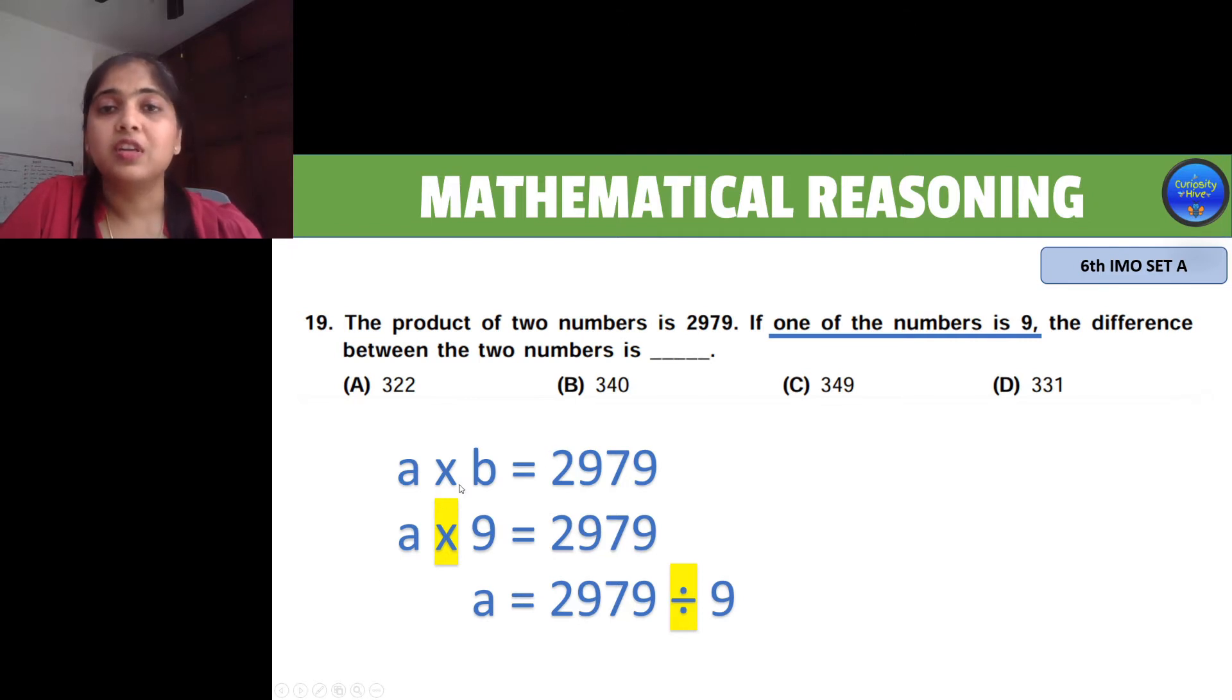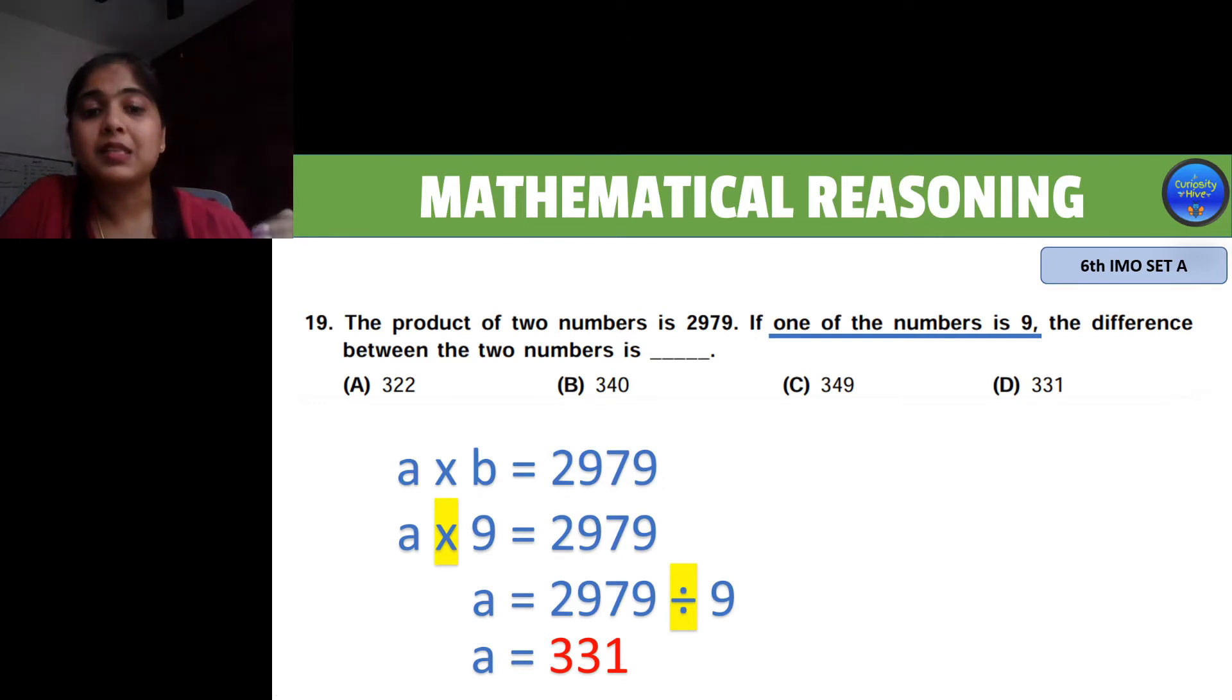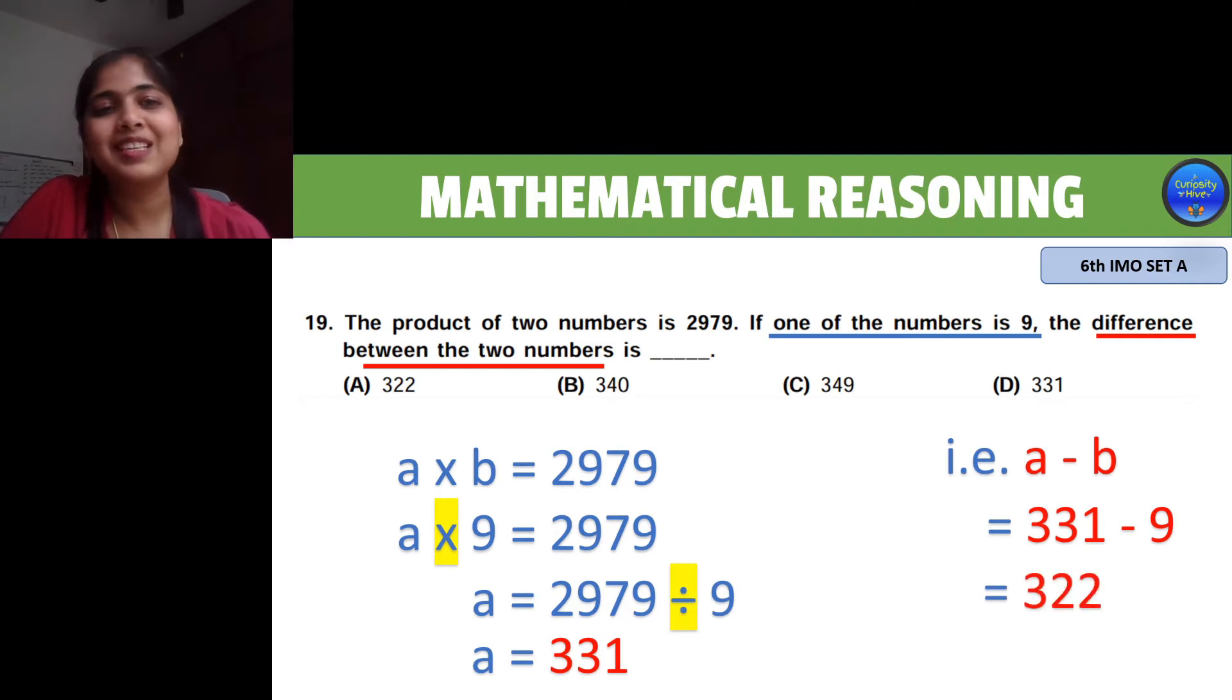Whenever any equation is balanced from left-hand side to right-hand side, the plus becomes minus and multiplication becomes division and vice versa. If we divide 2979 by 9, we get A to be 331. The difference between the two numbers is A minus B, which is 331 minus 9, which is 322. So option A is the right answer. Try to use these kinds of tips to get to the answer even without solving.